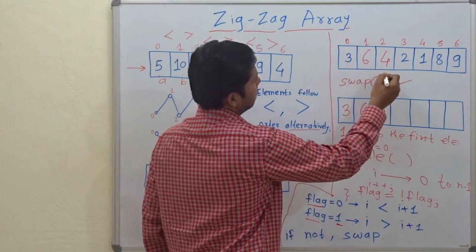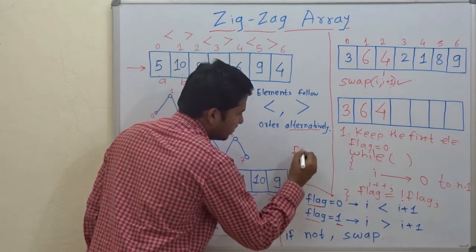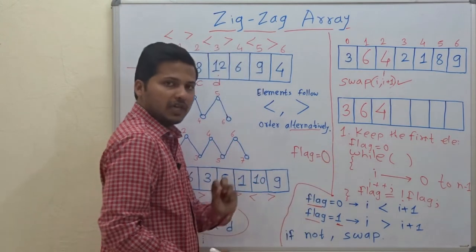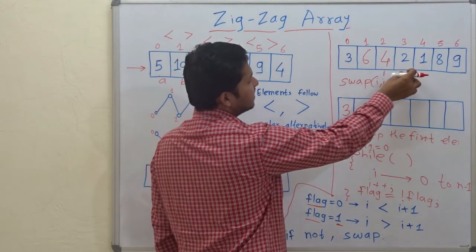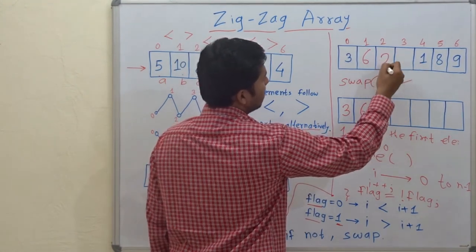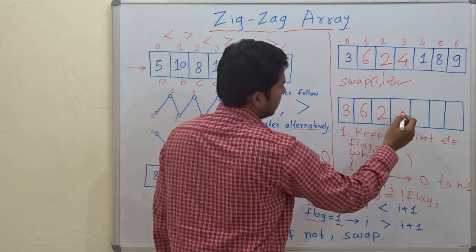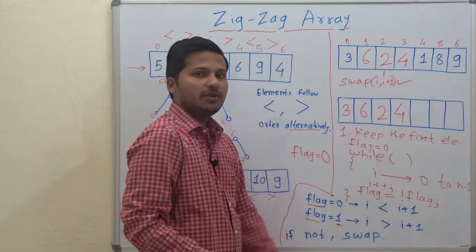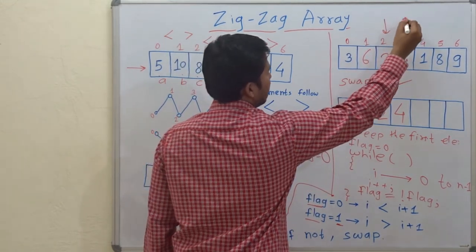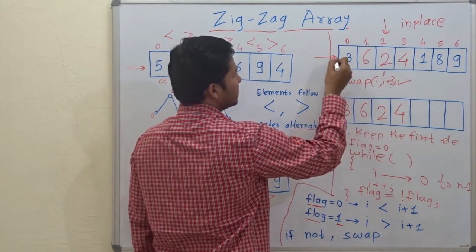Now increment i and change the flag. The flag was 1, so now it becomes 0. With flag=0, the i-th element should be less than the next element, but 4 is greater than 2, so swap again — 2 comes here and 4 goes there. The procedure is done in-place. Then increment i, flag becomes 1, and 4 is greater than 1 — that satisfies the property.